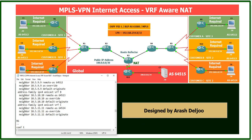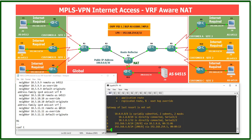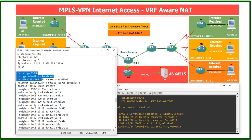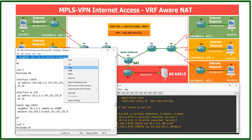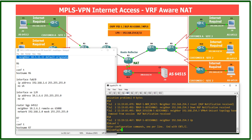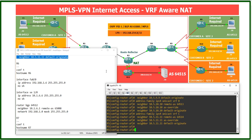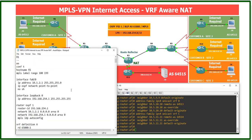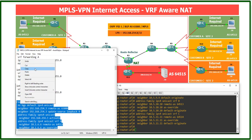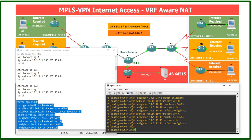We can now copy this configuration from Notepad and paste it into the CLI. First, copy the BGP configuration for Router 5 and paste it into the Router 5 CLI with 'conf t'. Then copy the configuration for R1 and paste it into Router 1.